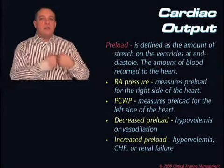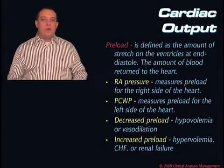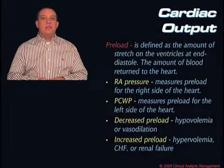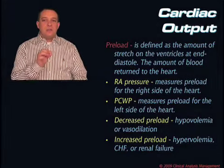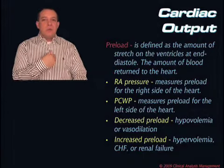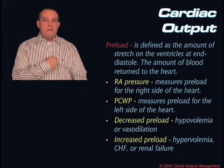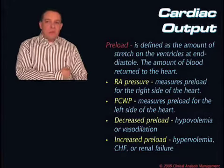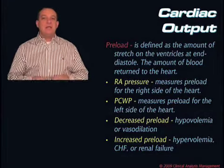In contrast, when we want to look at the left side of the heart, that's where we use a Swan catheter. When we put in the Swan and inflate the little balloon, we isolate the right side of the heart from the left side, and we actually get an indirect measurement of preload for the left side. The reason we measure the wedge — the pulmonary capillary wedge pressure or pulmonary artery occlusion pressure — is to get a reflection of the preload for the left side of the heart.